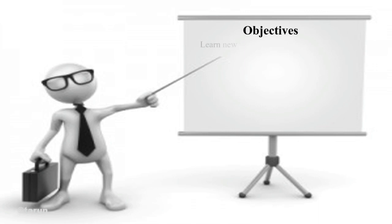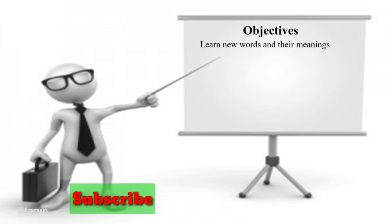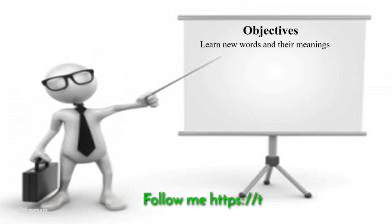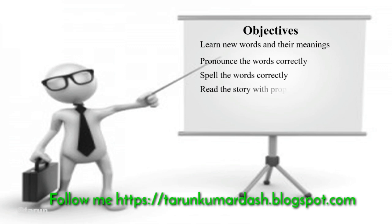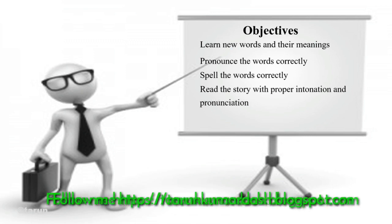What are the objectives? The first objective says, after reading this story, we are going to acquire some competences. Number one: learn new words and their meanings. Pronounce the words correctly. Spell the words correctly. Read the story with proper intonation and pronunciation.